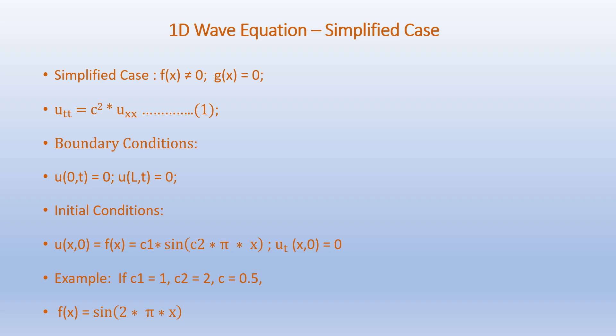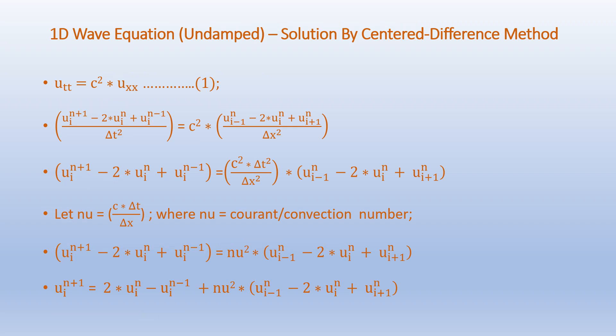We assume f(x) to be a sine function. To further simplify, let us consider the constants c1 equals 1 and c2 equals 2. We will now solve the partial differential equation using the centered difference method. We reproduce the original PDE in equation 1: u_tt equals c squared times u_xx.